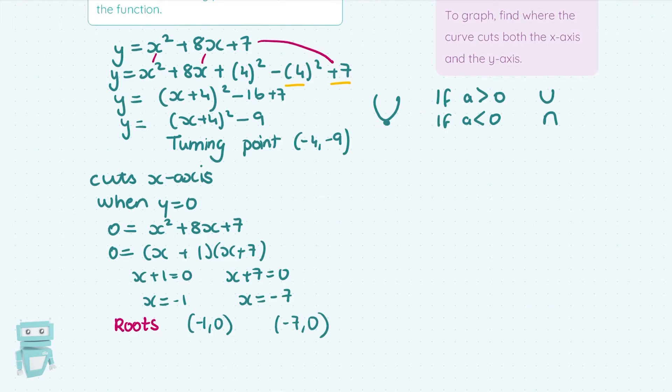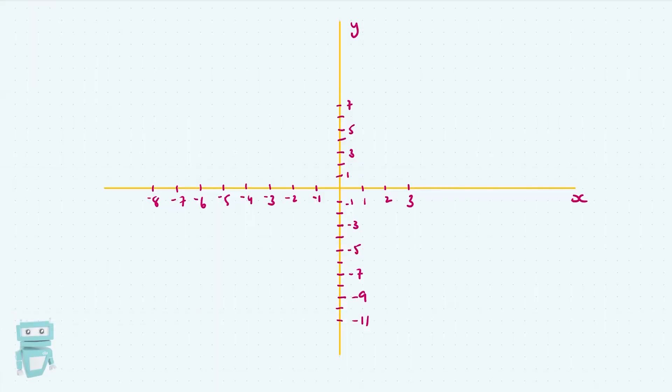Now we'll sketch the function here using all that information, using our roots and using our turning point to get an idea of what this U-shaped function looks like. We'll draw a sketch of this curve. So we worked out the roots to be -1, 0 and -7, 0. And then we found the turning point to be -4, -9. Halfway between our two roots there, we can see our -4. So -4, -9, put that. And then all we need to do is join up this curve in a nice, smooth fashion. And that's our function f(x). We already worked out f(x) in completing the square format to be (x + 4)² - 9.